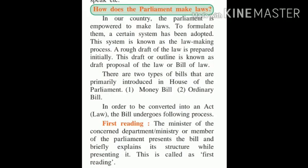Now, how does Parliament make laws? Parliament is empowered to make laws, and a certain system called the law-making process has been adopted. In the beginning, a rough draft or outline is prepared, known as the draft proposal or bill. There are two types of bills primarily introduced in the house: the money bill and the ordinary bill.